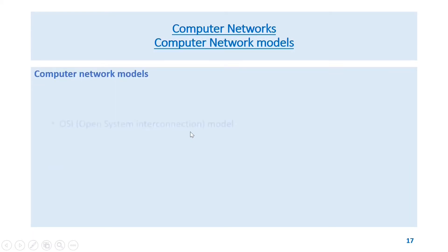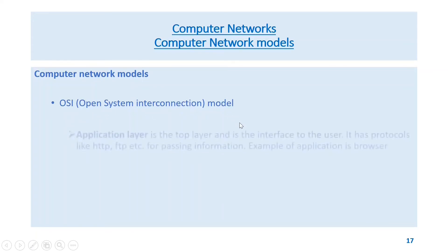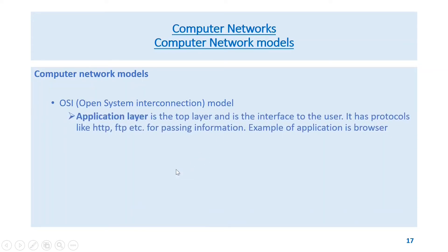Computer network models: The OSI model (Open System Interconnection model) has seven layers. The first is the application layer — this is the top layer and is the interface to the user. It has protocols like HTTP and FTP for passing information. An example of an application is a browser.